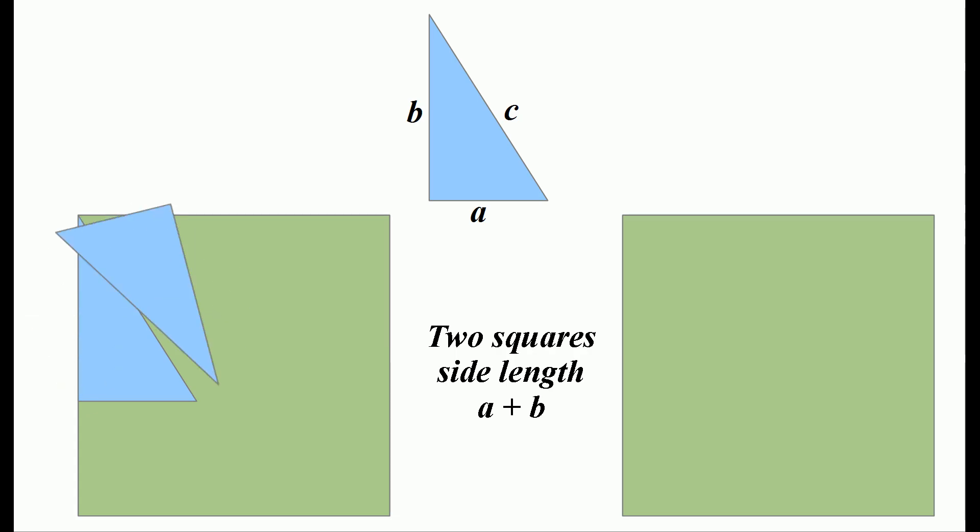Inside each of these squares, we're going to strategically place four copies of the original right triangle. What remains in each of the figures is green areas that are squares.